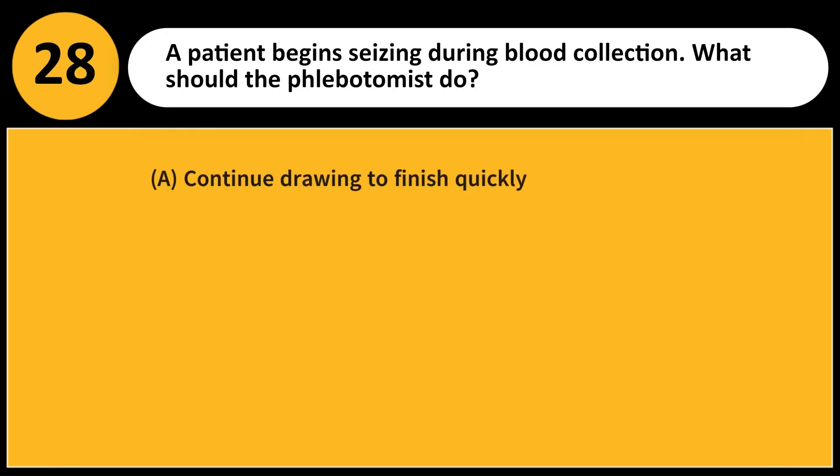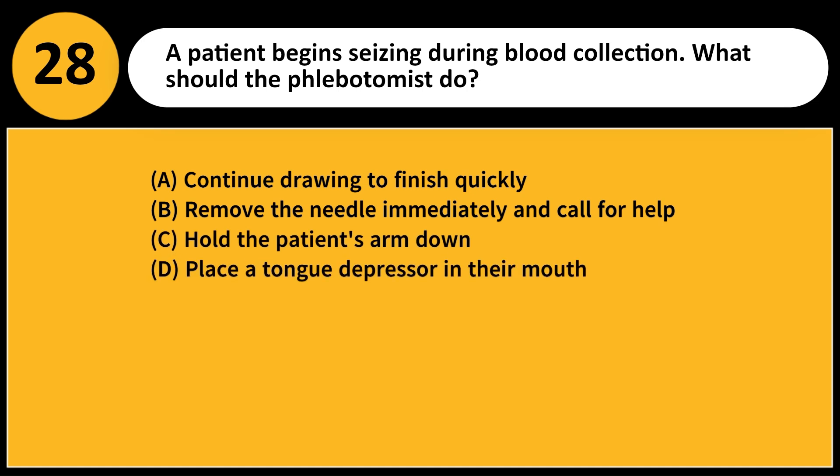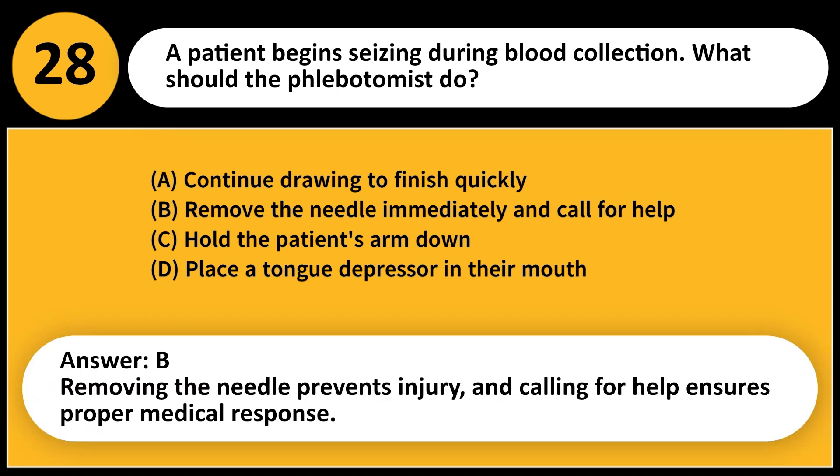A patient begins seizing during blood collection. What should the phlebotomist do? A. Continue drawing to finish quickly. B. Remove the needle immediately and call for help. C. Hold the patient's arm down. D. Place a tongue depressor in their mouth. Answer: B. Removing the needle prevents injury and calling for help ensures proper medical response.